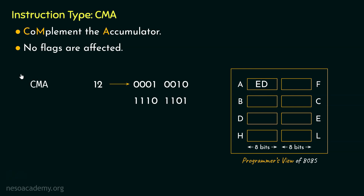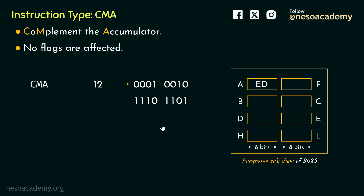Do remember this instruction is specific to the accumulator register. In the 8085 microprocessor, we don't have any variations that complement the contents of the general purpose registers (GPRs). So to complement any value residing inside a GPR or memory location, it must first be moved into the accumulator. Then CMA is executed to complement the value. Once done, the data transfer instruction STA can store the result back to a memory location, or a MOV instruction can transfer it back to the GPR.